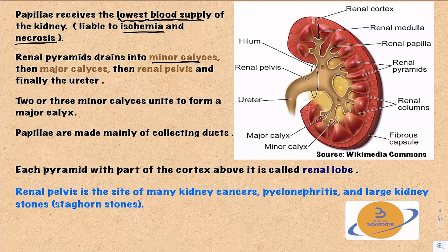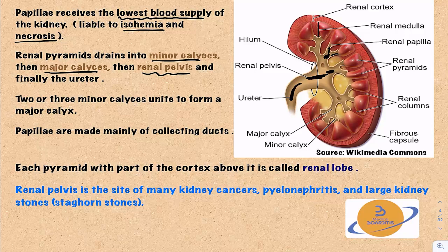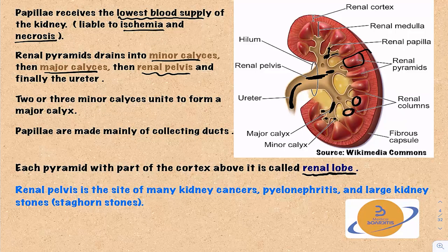The renal pyramids drain into minor calyces, which drain into major calyces, which drain into the renal pelvis, and finally into the ureter. Two or three minor calyces drain into one major calyx. The papilla is composed mainly of collecting ducts, the final part of the renal tubules. Each pyramid with the overlying part of the renal cortex is called a renal lobe.